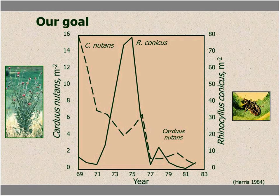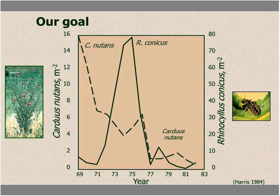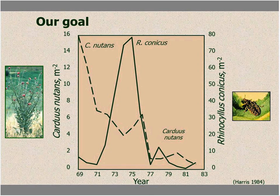What we're trying to do with biological control: on the left we have a weed — in this case a nodding thistle — and on the right we have the biocontrol agent, Rhinocillus conchus. In the 1960s, the dotted line shows the nodding thistle population and the solid line shows Rhinocillus when the weevil was introduced. Basically the dotted line goes down as Rhinocillus increases, and by around 1977 we get some sort of equilibrium much more tolerable than the level of nodding thistle we had at the beginning. That's our goal with weed biocontrol.